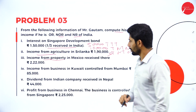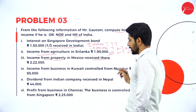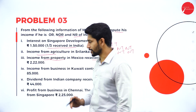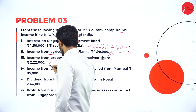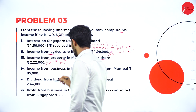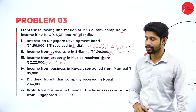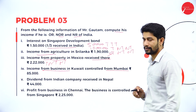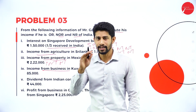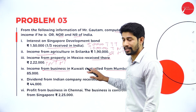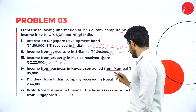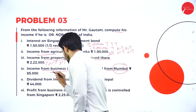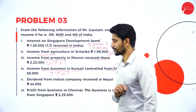Next: income from property in Mexico, received there. Again, income received in Mexico itself — foreign other than business income — taxable, not taxable, not taxable. Next: income from business in Kuwait controlled from Mumbai. It is a business, and the business is controlled from India (Mumbai). Rupees 85,000 — treatment is taxable, taxable, not taxable.